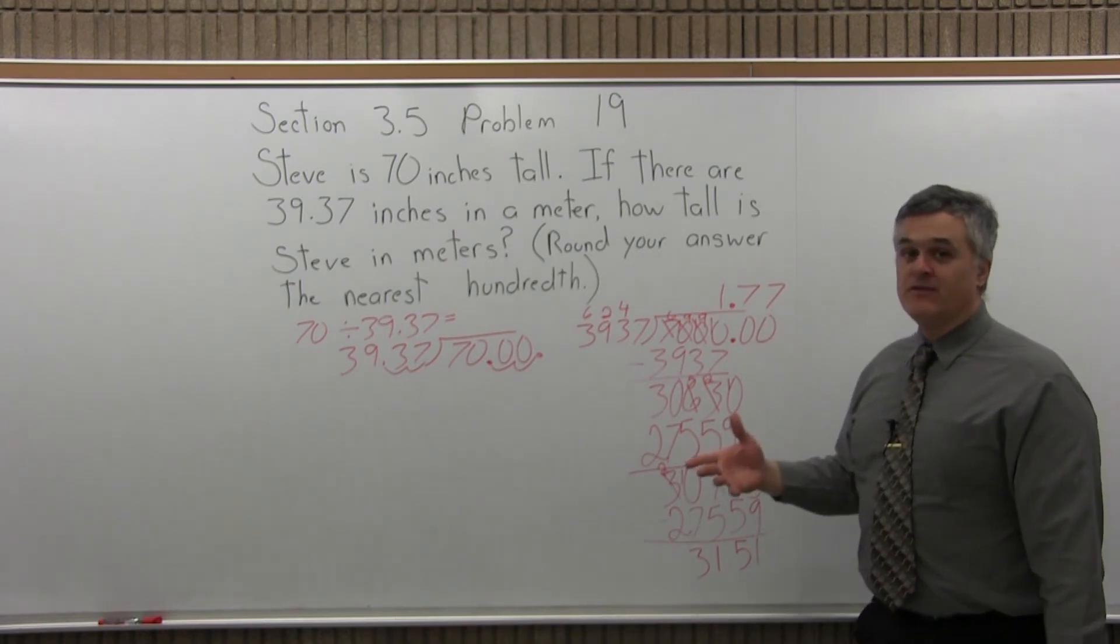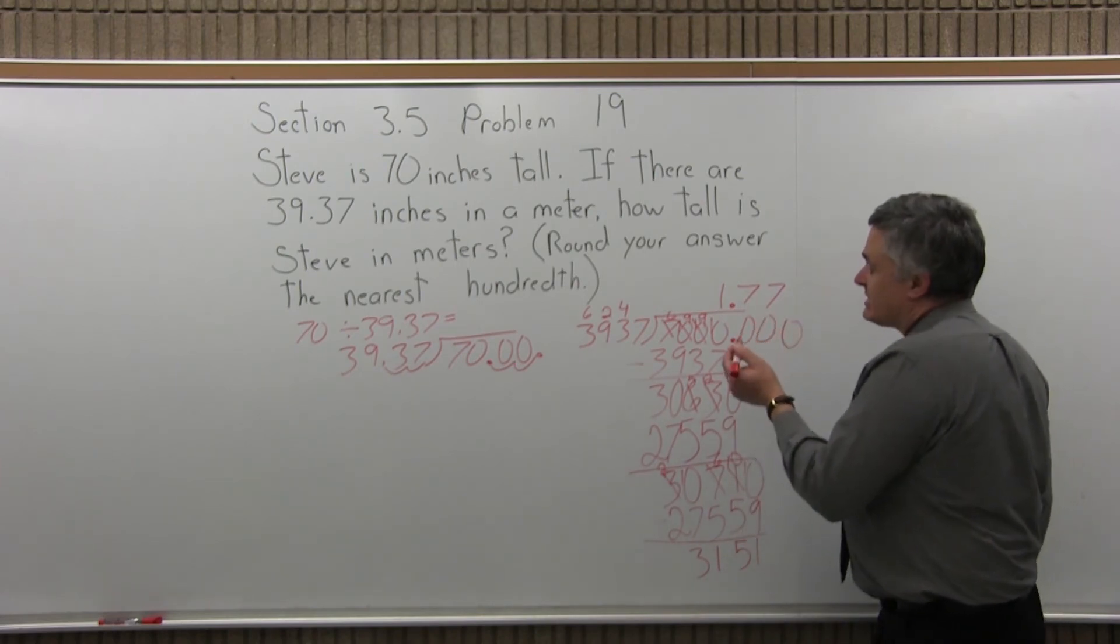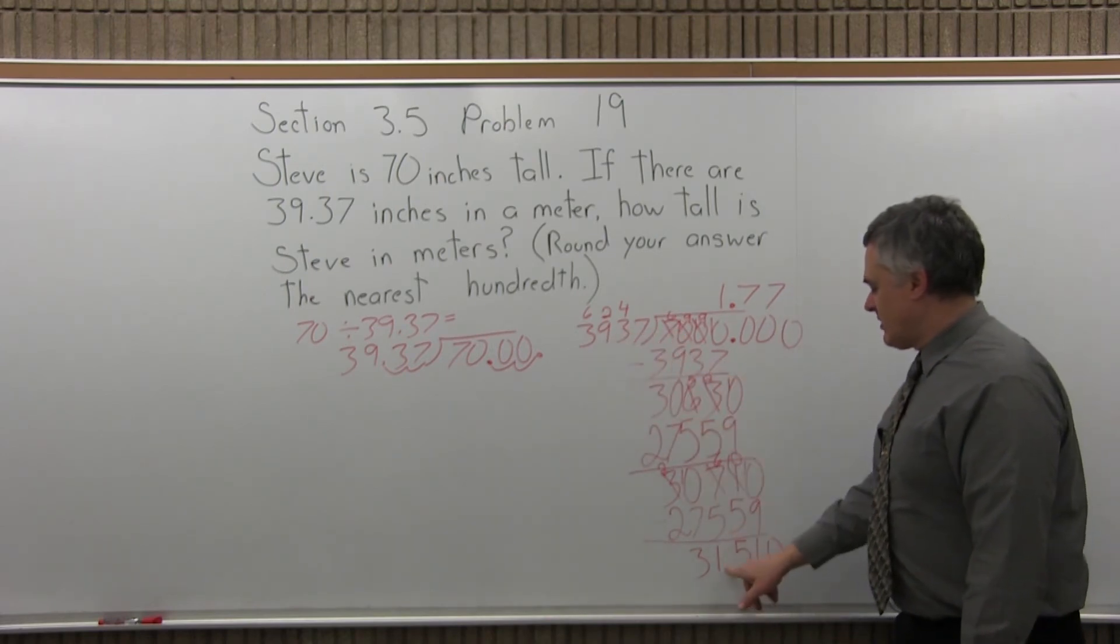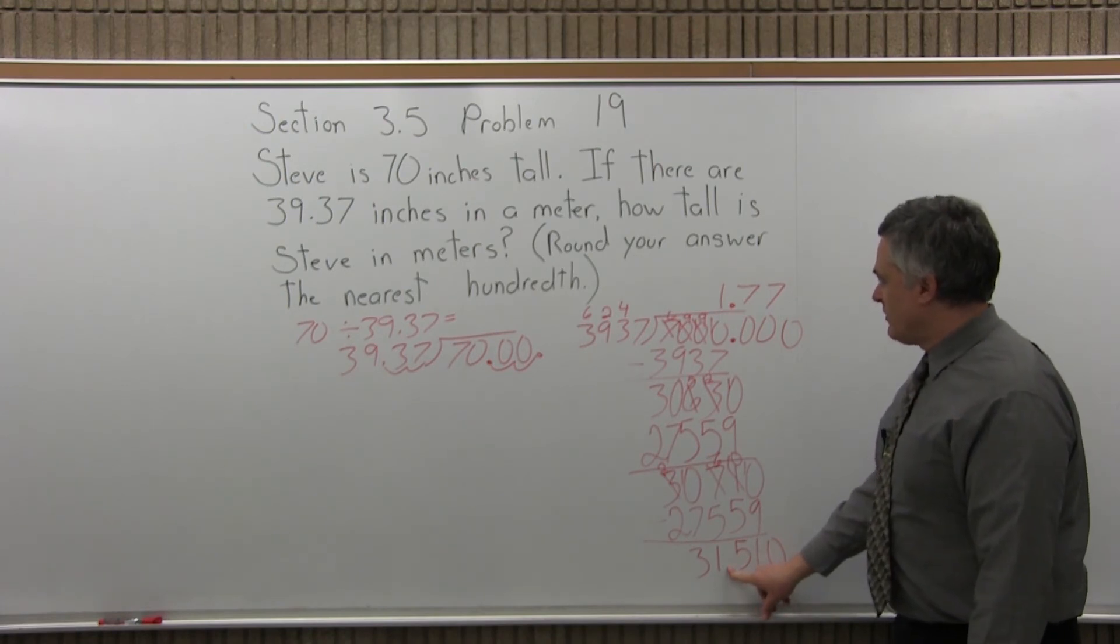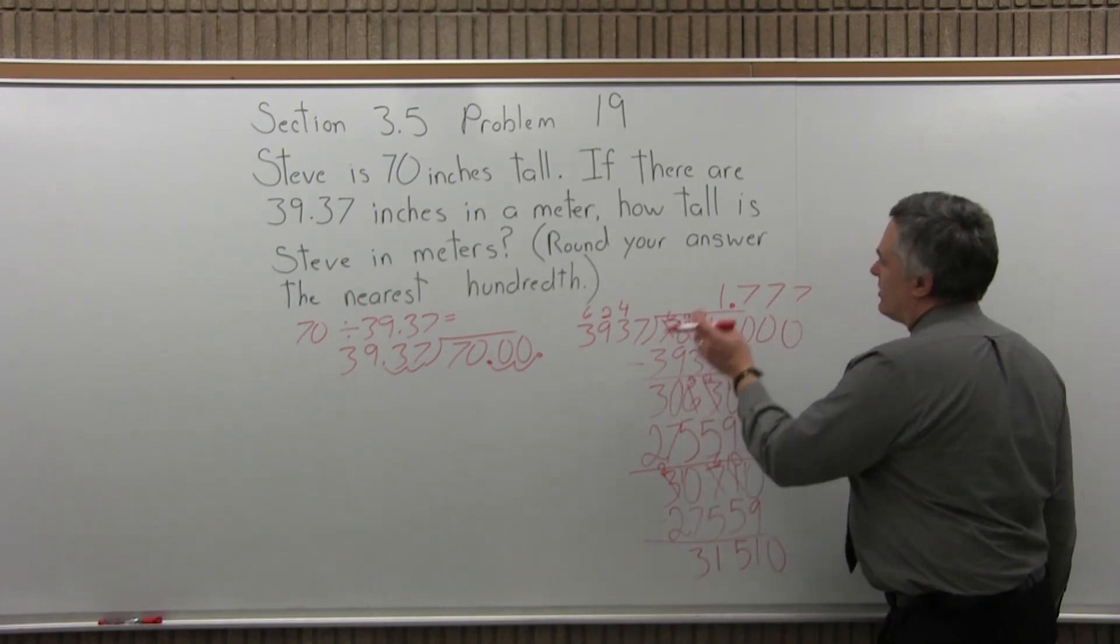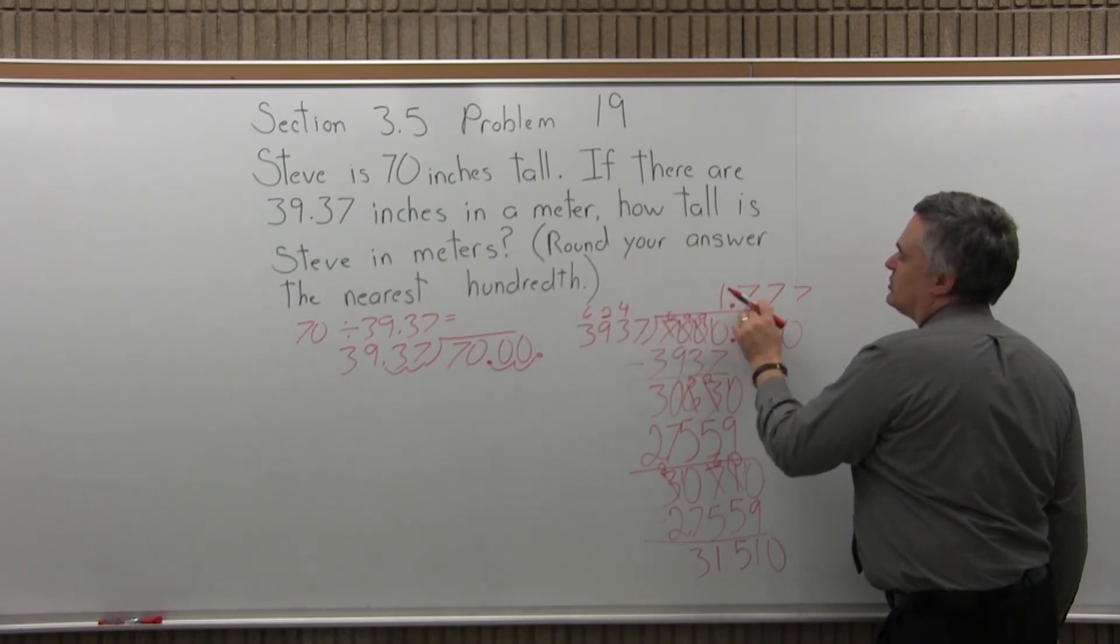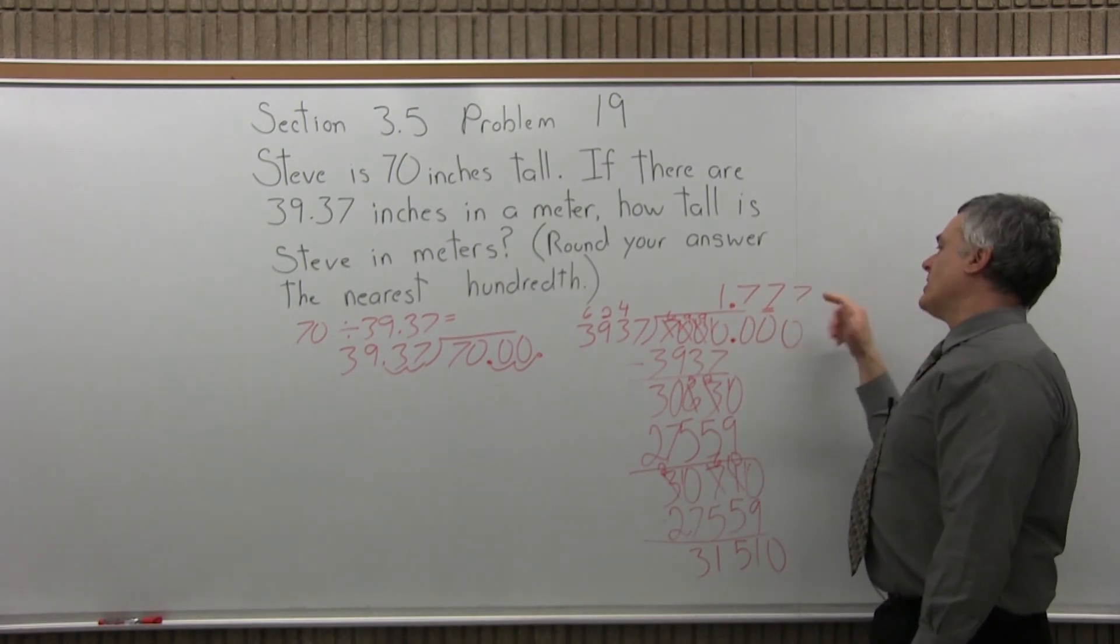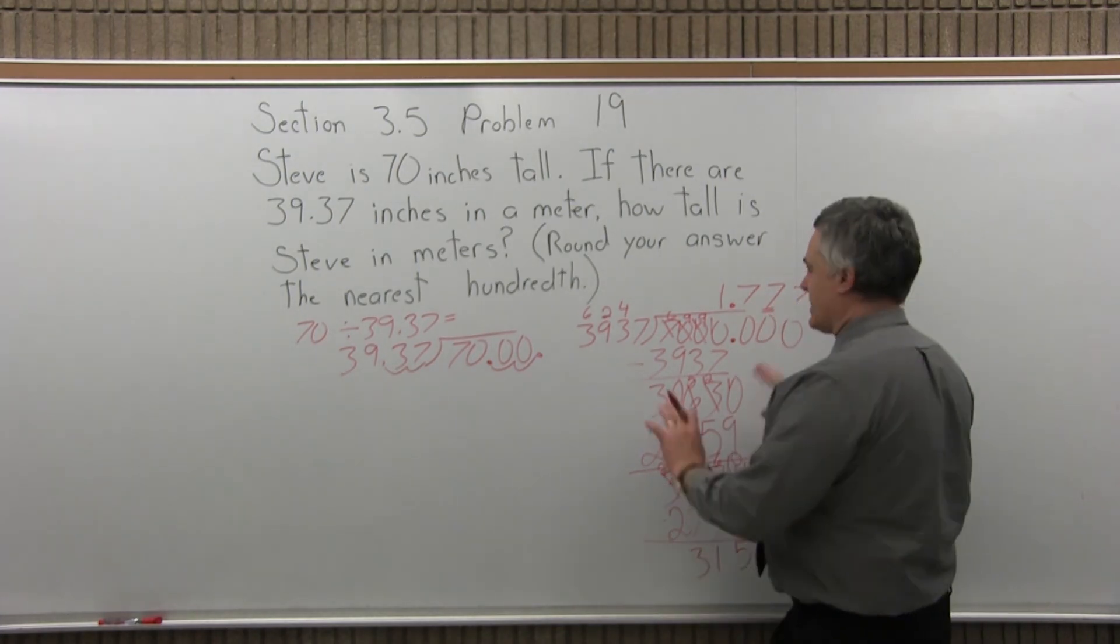Now again it didn't go in evenly. I want to know what happens one more digit out. So figure that I have a 0, again it's actually there, we just don't bother to write it. Bring it straight down. So I want 3937 going into 31,510, and based on my answers from before, I can see I'm getting another 7. I'm getting more 7s. And at this point, I don't care what happens after. The question says round it to the nearest hundredth. So the hundredth position is two places to the right of the decimal place. So right now it's a 7. If I go out one more digit to the right, it's big enough when it says round it, that it's going to be 1.78. So I can stop there, even though it doesn't finish. It might go on forever before it goes in evenly. I have 1.78.